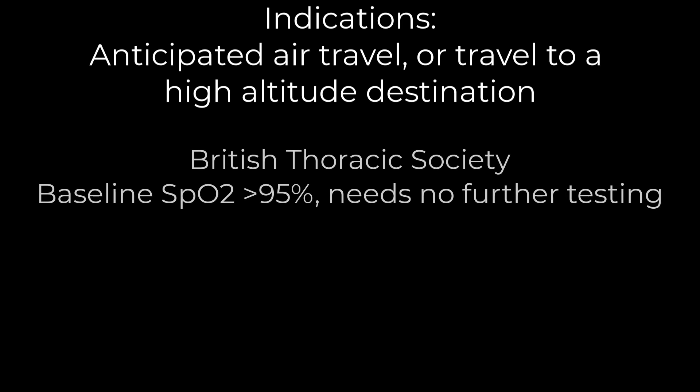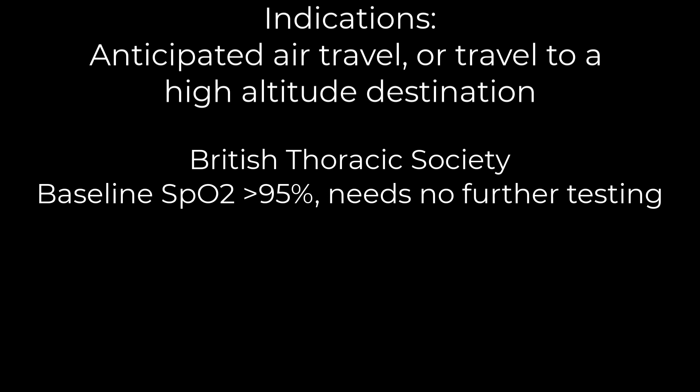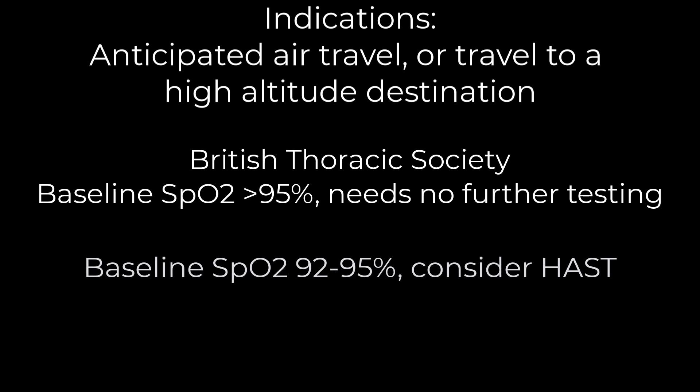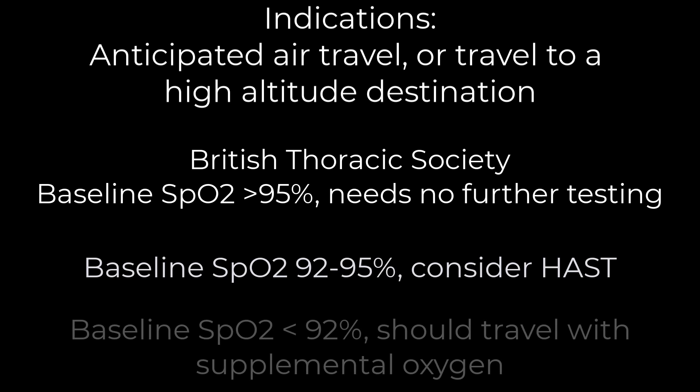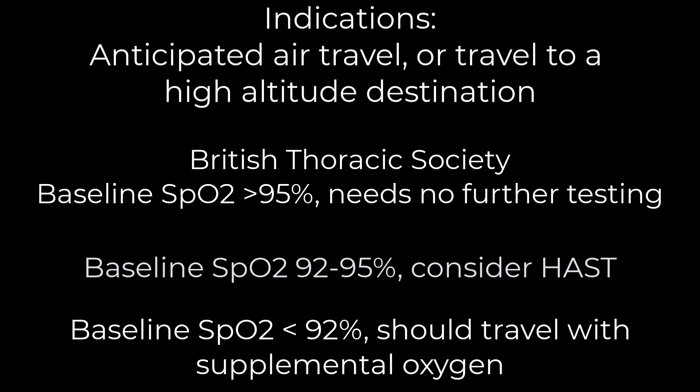Indications for a HAST test are if the subject anticipates air travel or travel to a high-altitude destination. According to the British Thoracic Society, if the subject's baseline SPO2 is greater than 95%, the subject needs no further testing. If the subject's baseline SPO2 is between 92 and 95%, a HAST test should be considered. If the subject's baseline SPO2 is less than 92%, the subject should travel with supplemental oxygen.